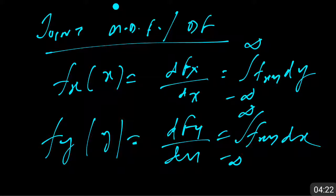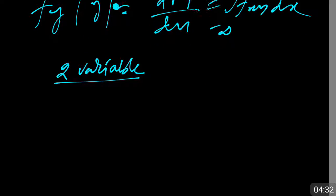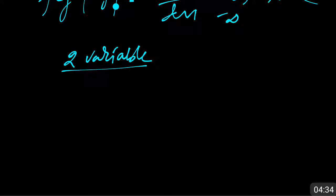Remember that joint functions mostly involve a two-variable structure. Even if there are three variables, then f_X with respect to Y and Z, f_Y with respect to Z and X, and f_Z with respect to X and Y will be the common format for solving this kind of structure. Now I am going to start with some problems on this basis.